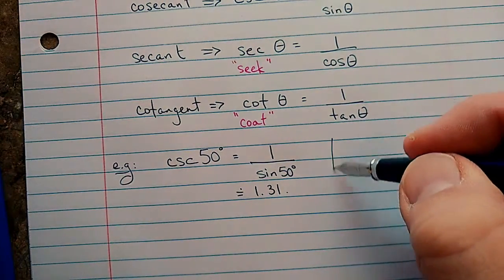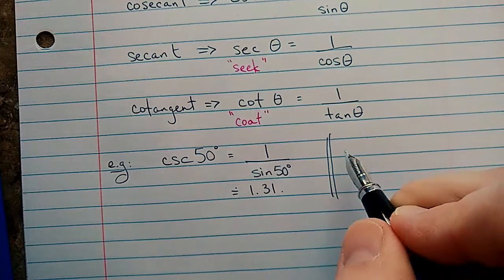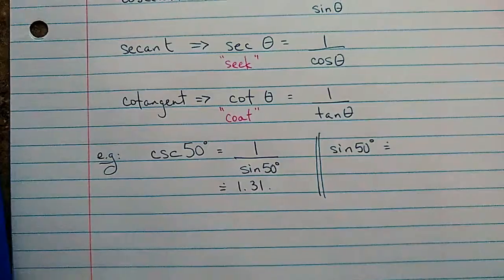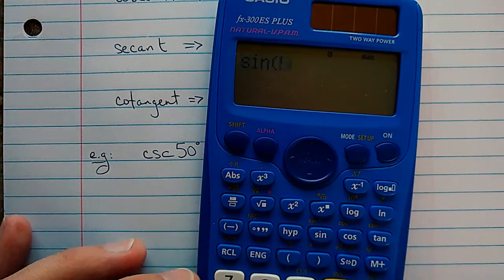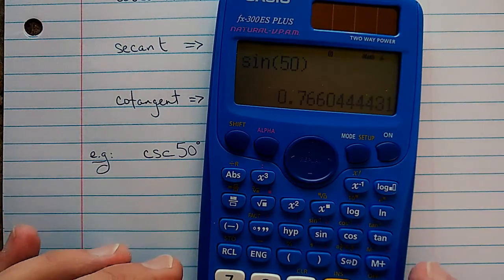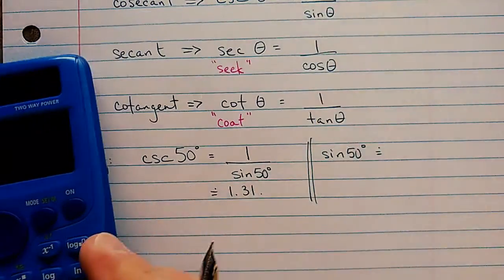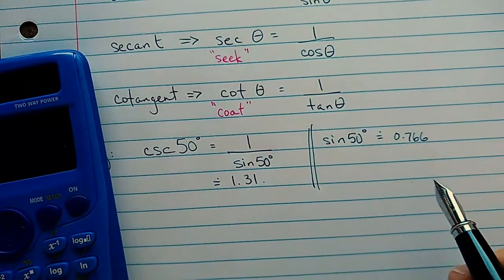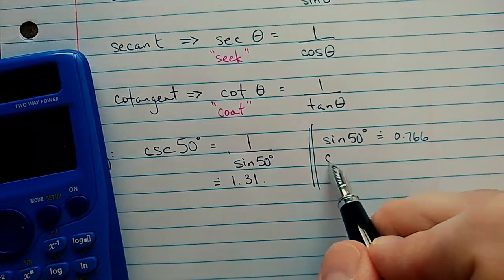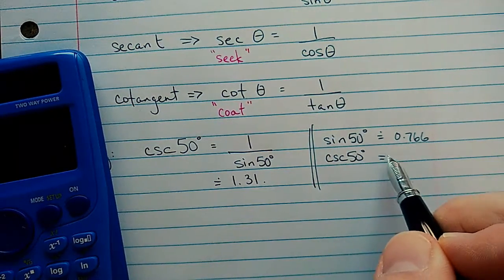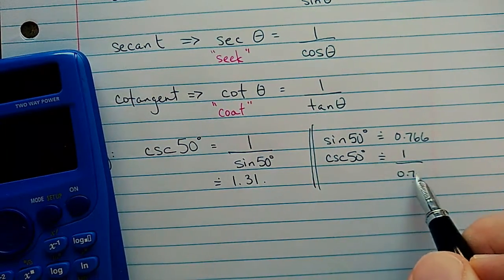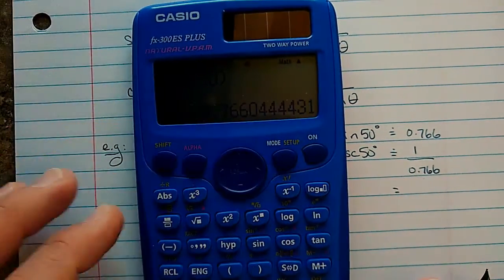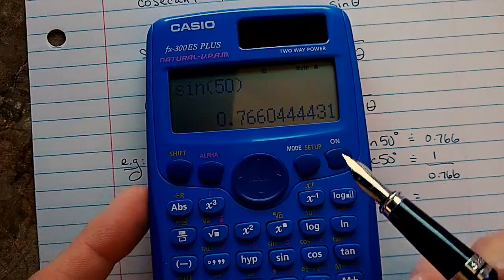Another equivalent way is to calculate the sine of 50 degrees first. Once again, grab the calculator. Sine of 50 degrees. 0.766 approximately. And I'm going to leave that on my calculator. The cosecant of 50 degrees then is about 1 divided by that number. You wouldn't necessarily have to write this down. And then on my calculator, I have a button for that. It's right here.